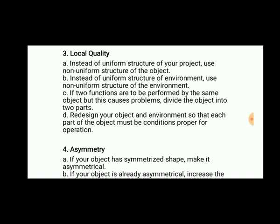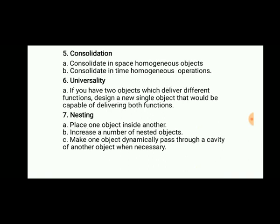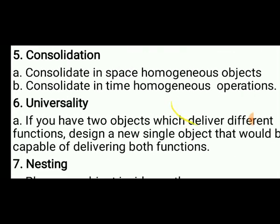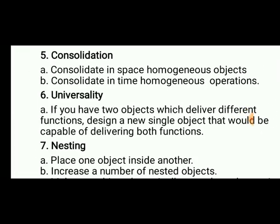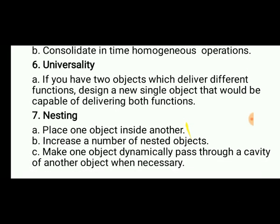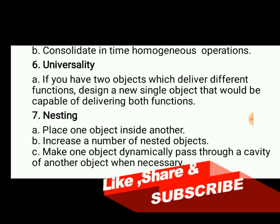Asymmetry: if your object has a symmetric shape, make it asymmetric; if it is already asymmetrical, increase the degree of asymmetry. Then consolidation: consolidate in space for homogeneous objects, and consolidate in time for homogeneous operations. Then universality: if two objects differ, make them into a single object.